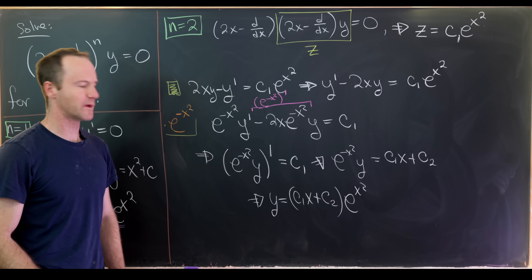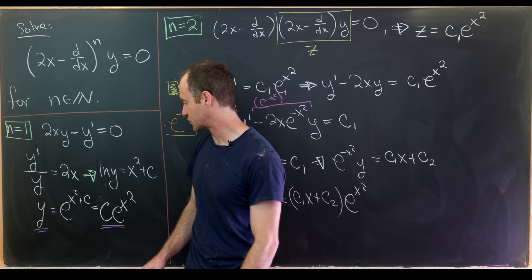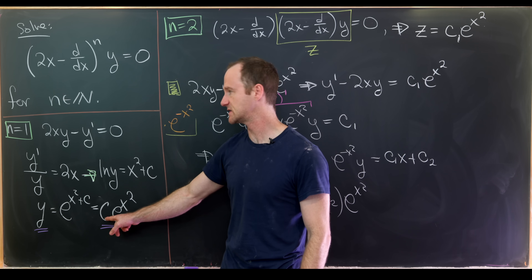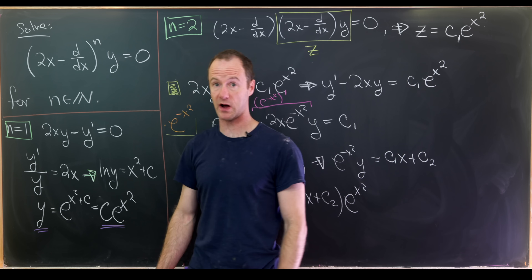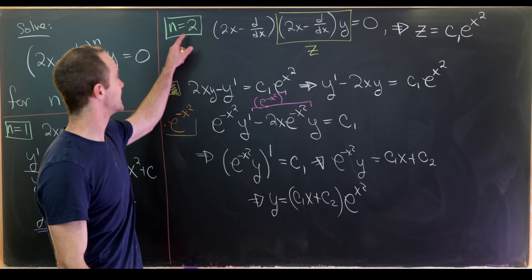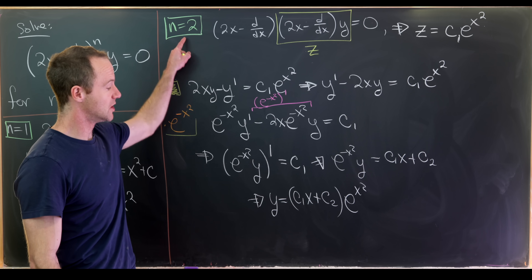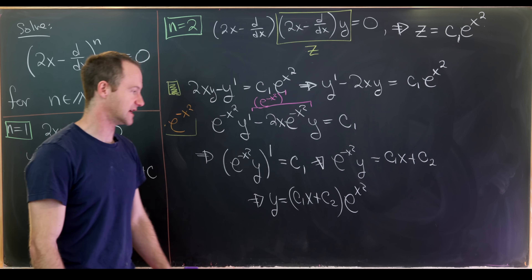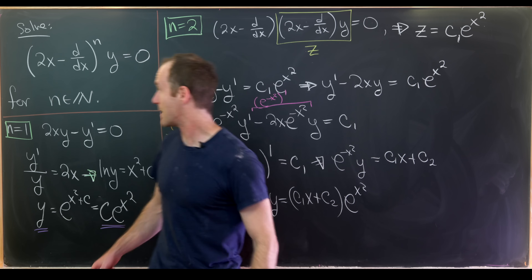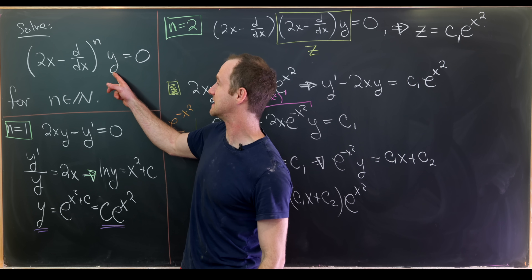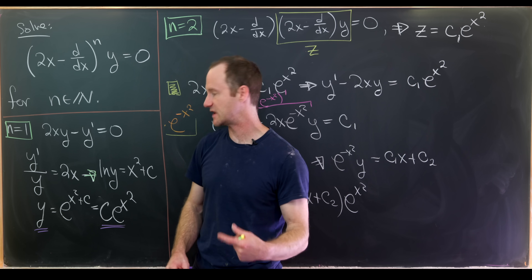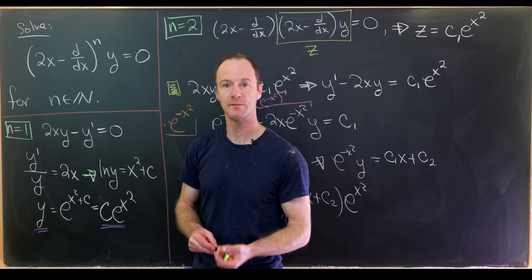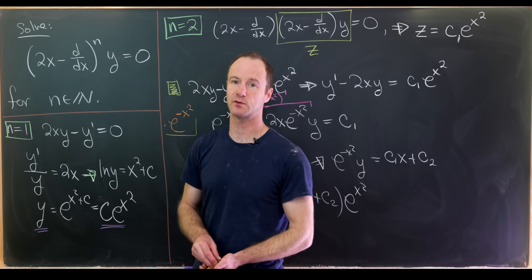Comparing the two cases: when n equals 1 we had a degree-0 polynomial (a constant) times e to the x squared; when n equals 2 we have a degree-1 polynomial times e to the x squared. This motivates a general guess: the solution should be a degree-(n−1) polynomial times e to the x squared, which is exactly what we'll prove on the next board.